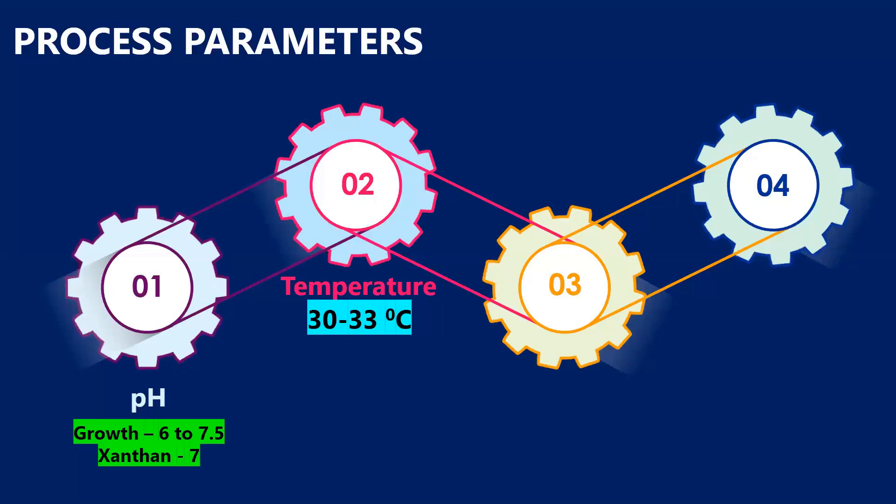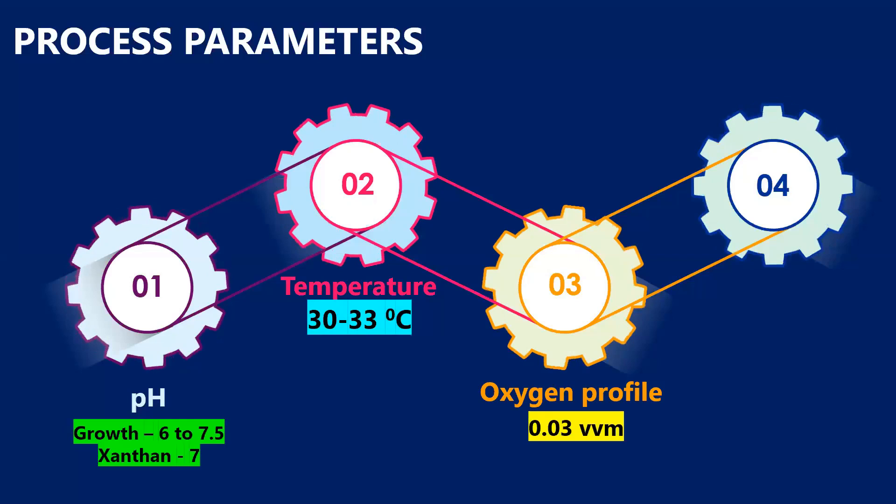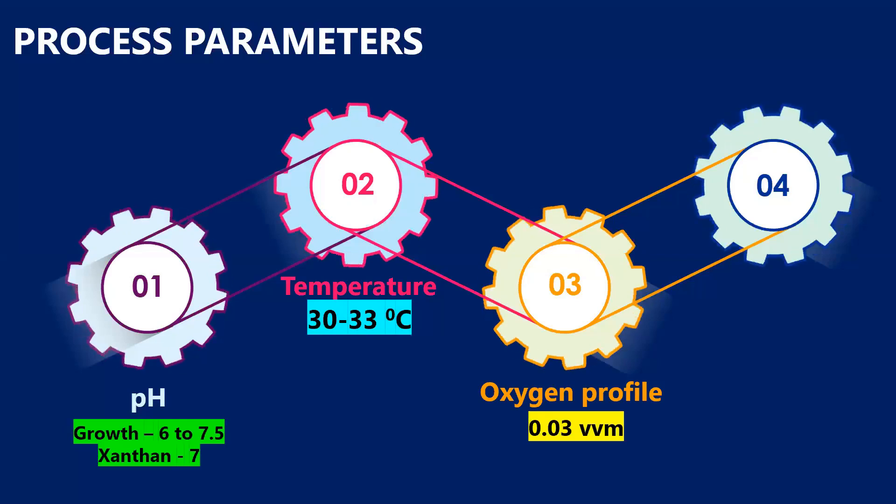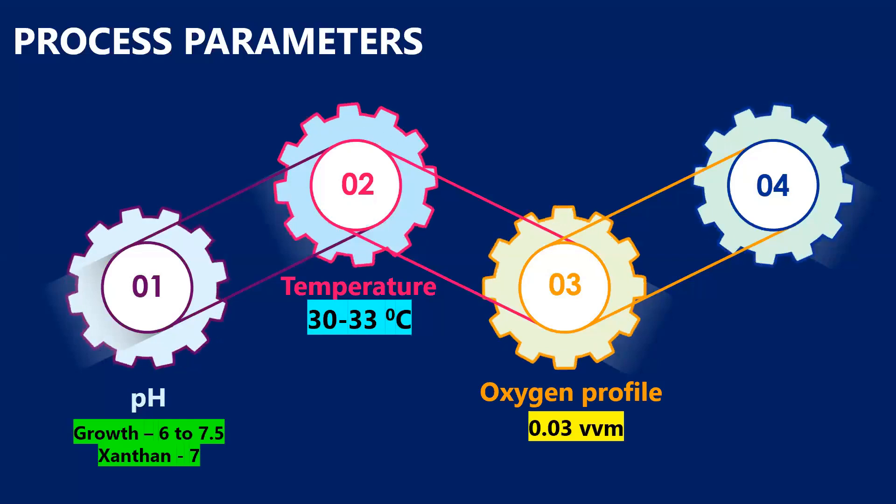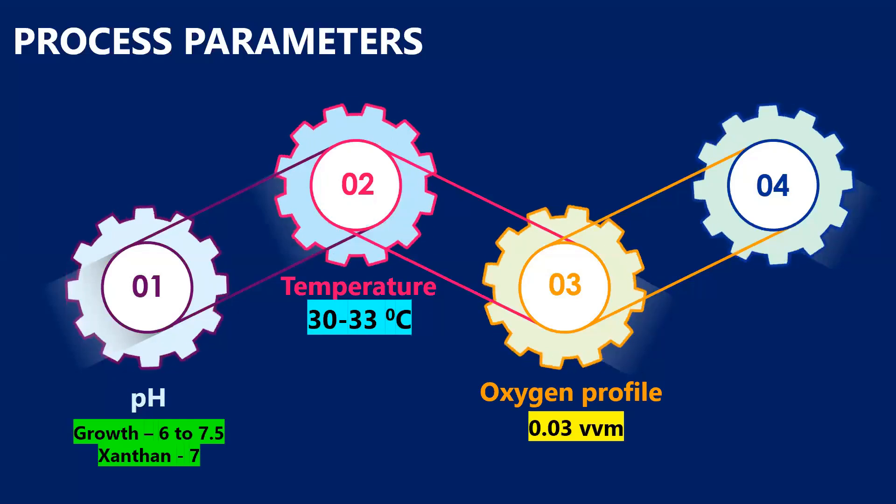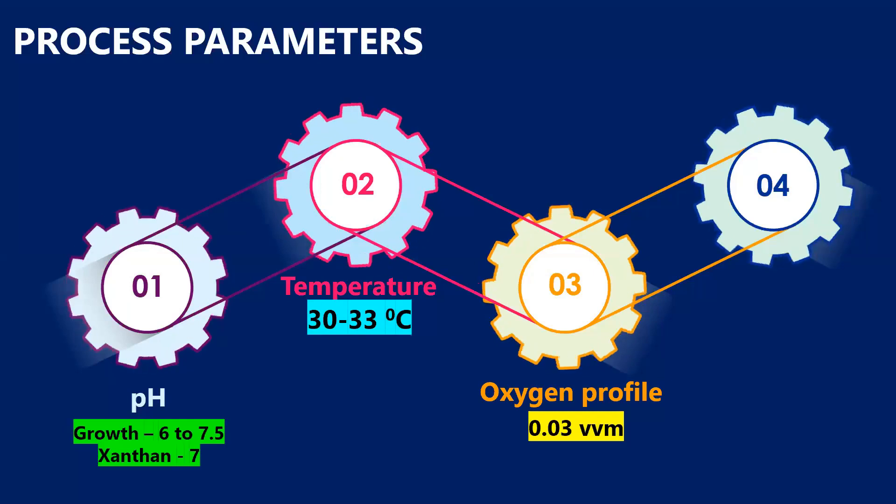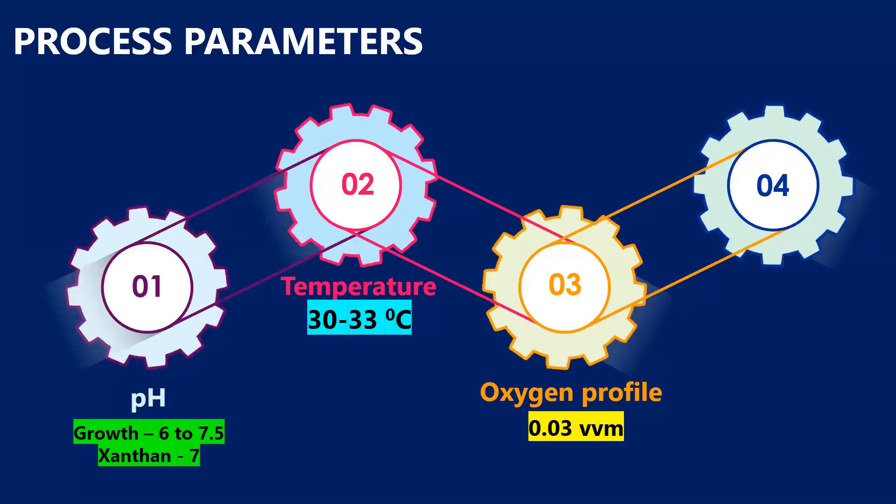Next parameter is the oxygen profile. Xanthomonas is an obligate aerobe and thus it requires continuous aeration. During the later phases, when higher amounts of xanthan are produced, the media becomes highly viscous and thus aeration is a problem at that point. So care must be taken to continuously aerate the mixture.